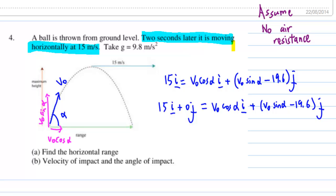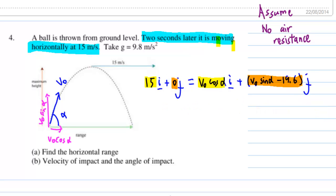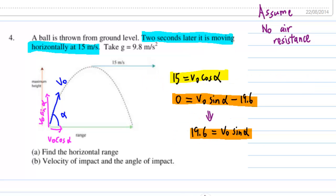So compare the component, we must have 15 equal to V0 cosine alpha, 0 equal to V0 sine alpha minus 19.6. For the second equation, we have 19.6 equal to V0 sine alpha.